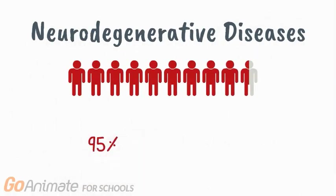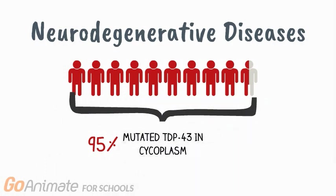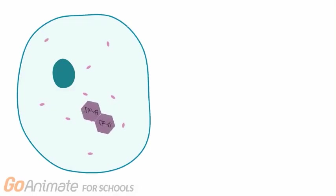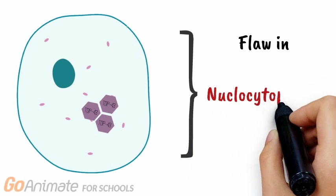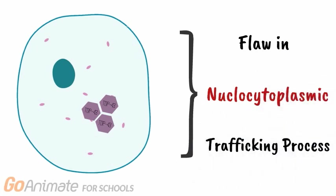Interestingly, 95% of people with neurodegenerative diseases will have an accumulation of mutated TDP43 proteins in the cytoplasm. The aggregation of TDP43 or FUS in the cytoplasm suggests a potential flaw in the nucleocytoplasmic trafficking process in ALS patients.